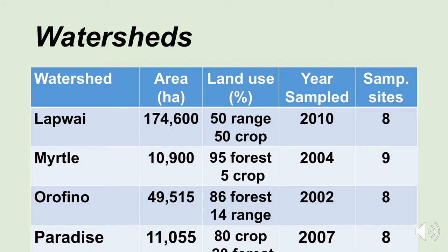We had the Orofino watershed — almost 50,000 hectares, primarily a forest watershed: 86% forest, 14% range. It was sampled in 2002 and had eight sampling sites. The Paradise Creek watershed is in Latah County — 11,000 hectares in size, 80% cropland, 20% forest land. Sampled in 2007, with eight sampling sites.